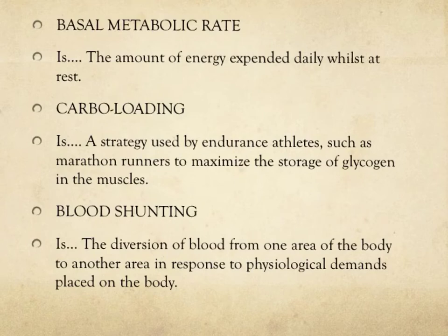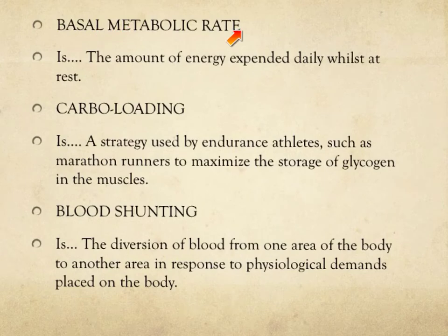By now we should have gained a good knowledge and understanding of the seven food groups that contribute to a healthy balanced diet. Within this slide we're going to focus on learning objective three, which is being able to explain three key terms. First off we have basal metabolic rate. This is the amount of energy expended daily whilst at rest, in the form of calories, and it can vary from individual to individual depending on their body size, body composition, gender, age and health.